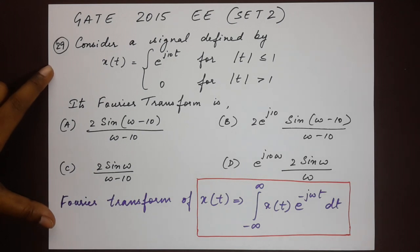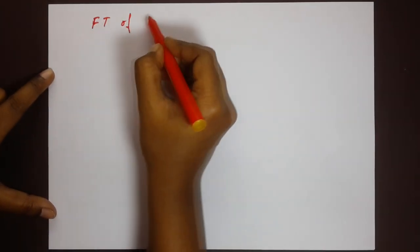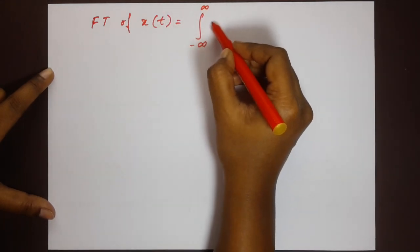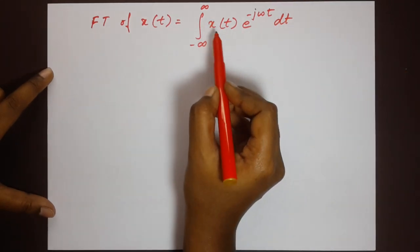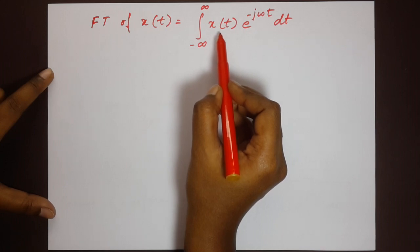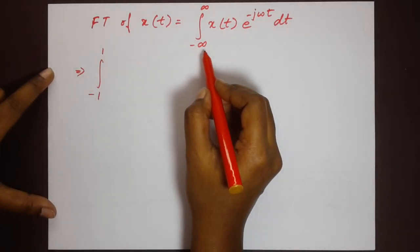So X(ω) = integral from minus infinity to infinity of x(t) · e^(−jωt) dt. Now let's use the signal definition from the question. For |t| ≤ 1, x(t) = e^(j10t). Substituting, the limits change from −∞ to +∞ to just −1 to 1.